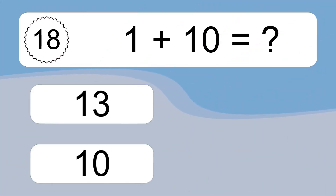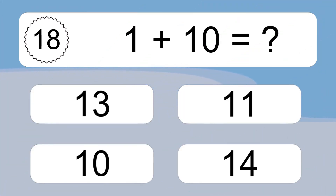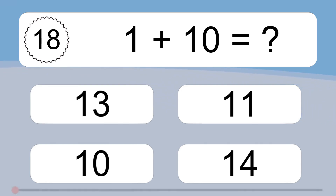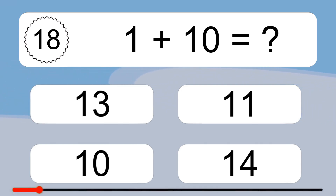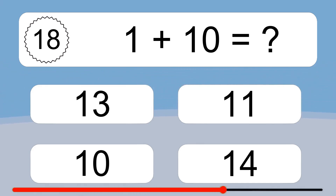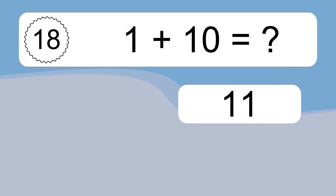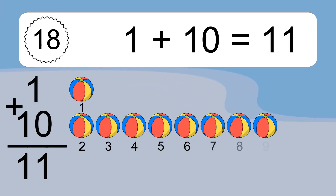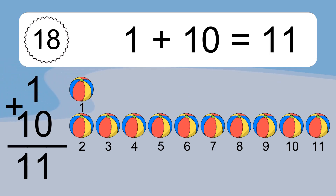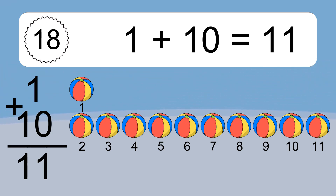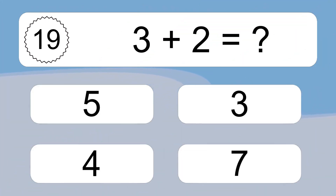1 plus 10 equals what? 1 plus 10 equals 11. Let's count it. 1, 2, 3, 4, 5, 6, 7, 8, 9, 10, 11.